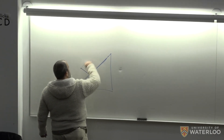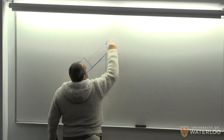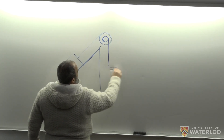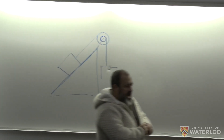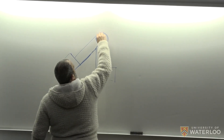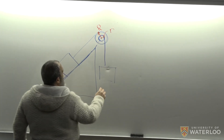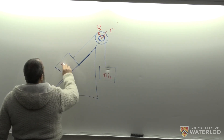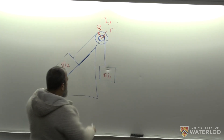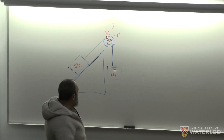So you've got a mass here, and you have a pulley. This pulley is a compound pulley — it has a big radius R and a small radius r. This is r, that guy's little r. And this is m1, and this is m2, and the moment of inertia of the pulley is I. Find the acceleration of m1.